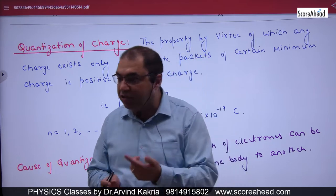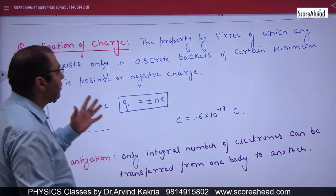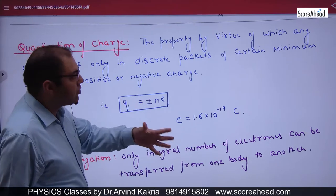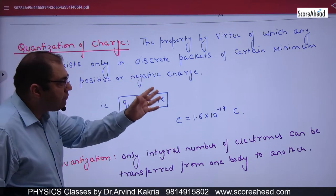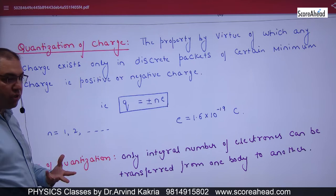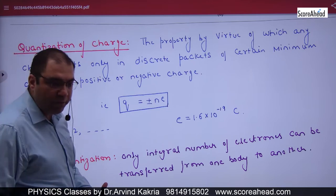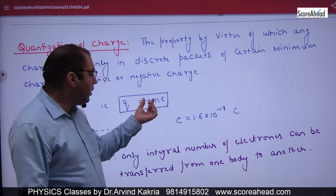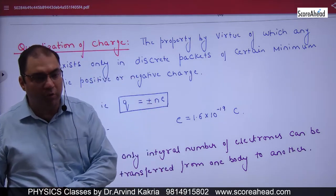I cannot give an electron in a fraction. This property, by virtue of which any charge exists only in discrete packets of a certain minimum charge, is known as Quantization of charge. So in any body, the charge will be N times E positive or N times E negative.